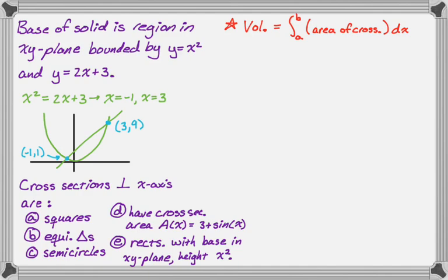So A and B are going to be x values, and then the area of the cross section is going to be a function of x. So let's do the problems. First, we're going to find the volume when the cross sections are squares. We're looking at that region in the xy-plane, so that goes from negative 1 to 3.